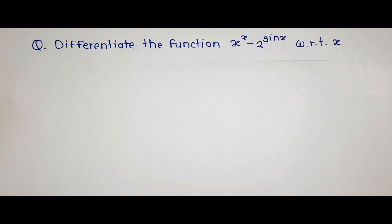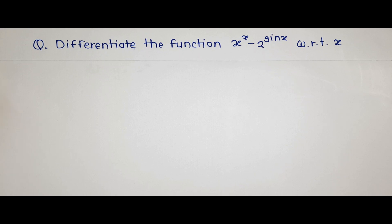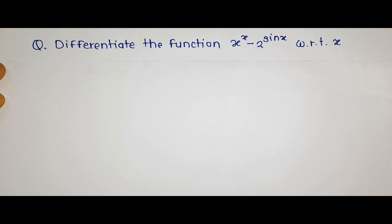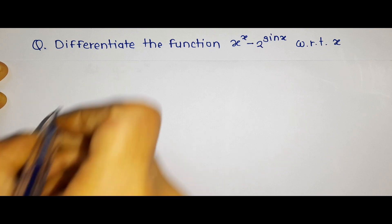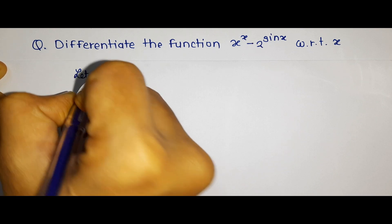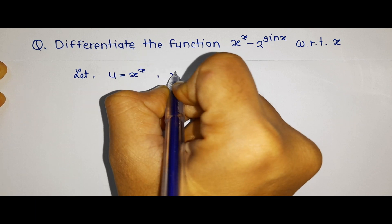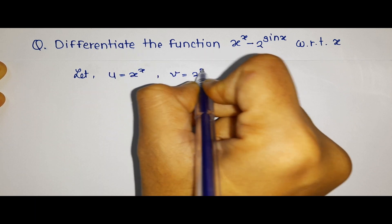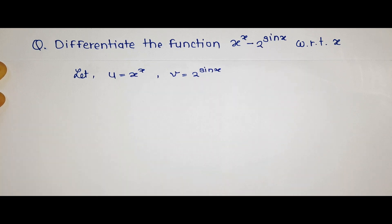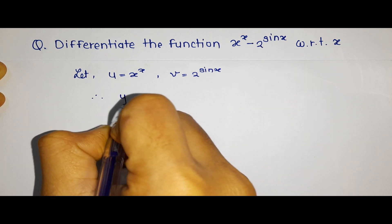Hello students, today we are going to find the differentiation of the function x raised to x minus 2 raised to sin x with respect to x. Finding differentiation of this term as a whole will be very complicated, so we will divide it into two separate parts. We will suppose u is equal to x raised to x, and v is equal to 2 raised to sin x.